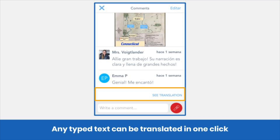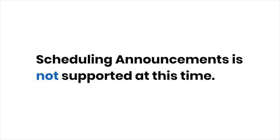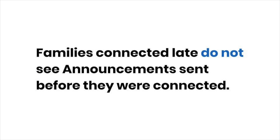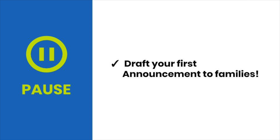Remember that all typed text can be translated in one click. Families with the device set to a language other than English will see 'See Translation' when translation is available. Unfortunately, scheduling announcements is not available at this time. If a family connects late, they will not see announcements sent before they connected. It's your turn — pause now and draft your first announcement to families.